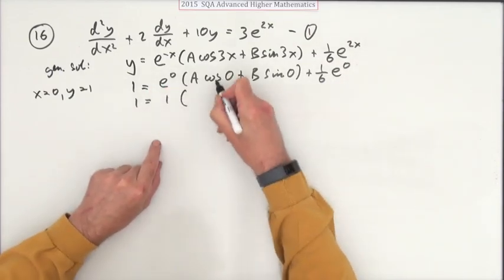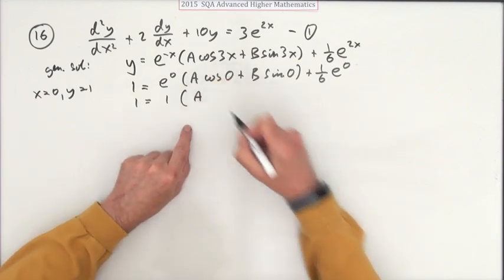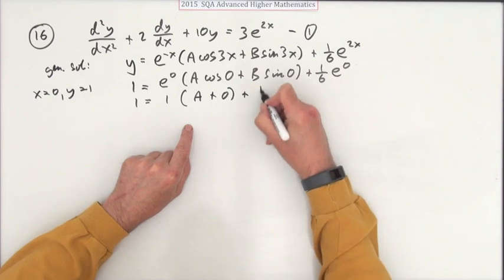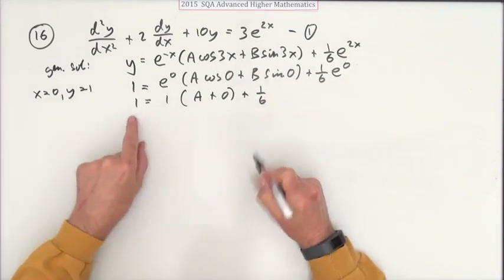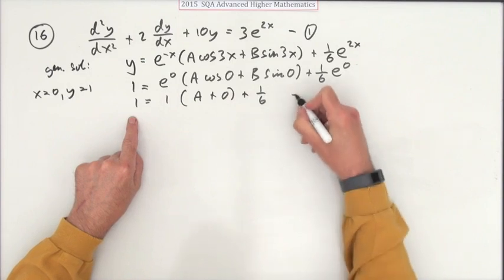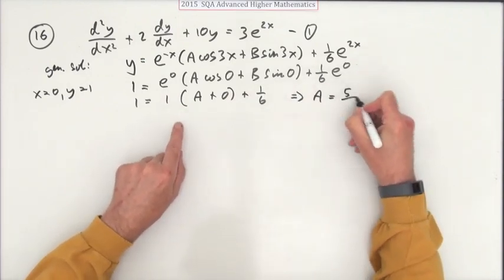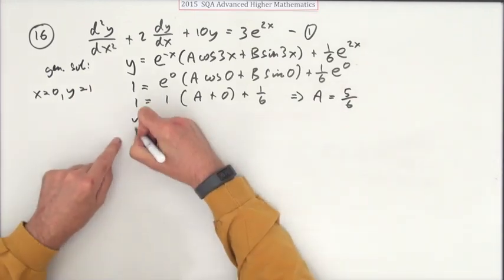So that's a 1, that's a 1, so it leaves the A. That's a 0 and that's a 1, so that leaves a sixth. So I've got A is equal to 1 take away a sixth, which means A equals five sixths. So I can put it back in now.